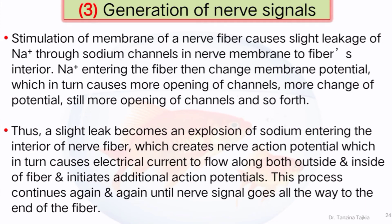Generation of nerve signals: stimulation of a nerve fiber causes slight leakage of sodium ions through sodium channels in the nerve into the fiber's interior. Sodium entering the fiber then changes the membrane potential, which in turn causes more opening of channels and more changes of potential, then still more opening of channels. Thus a slight leak becomes an explosion of sodium entering the interior of the nerve fiber, which creates a nerve action potential. This in turn causes electrical current to flow along both the outside and inside of the fiber and initiates additional action potentials. This process continues until the nerve signal travels all the way to the end of the fiber.